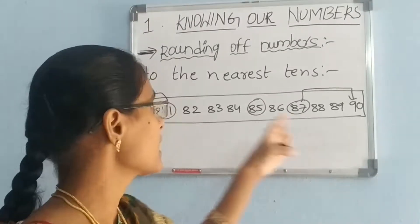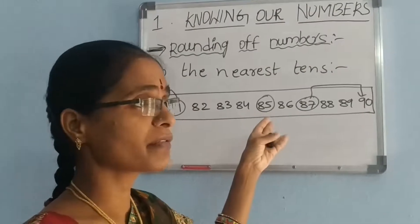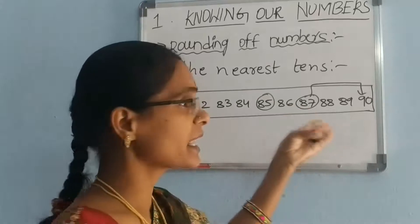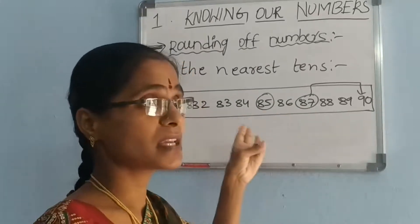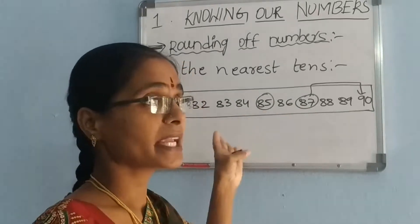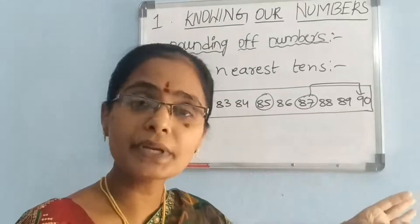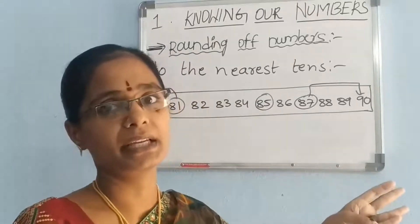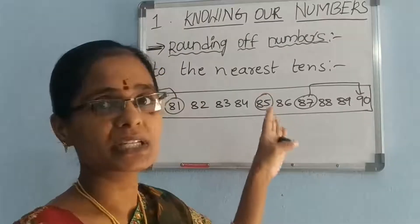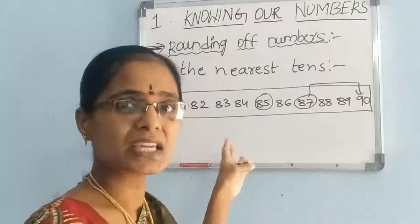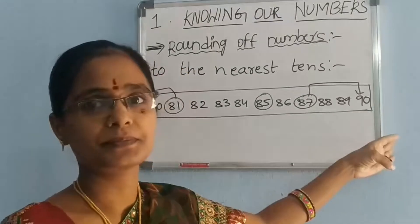Next, 87. 87 is nearest to 90 than 80, so 87 will be rounded up to 90. Next, 85. So 85 is at equal distance from 80 and 90. But by convention, it is nearest to 90.